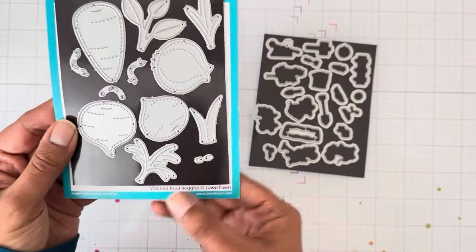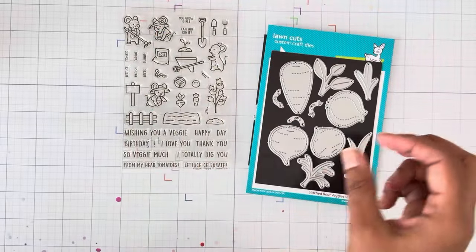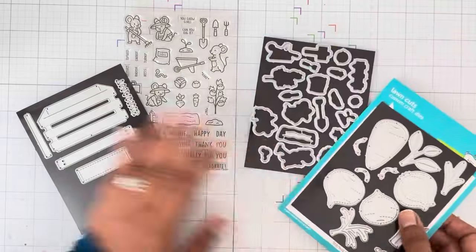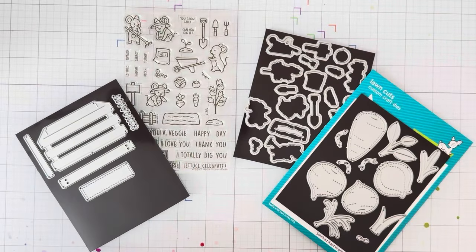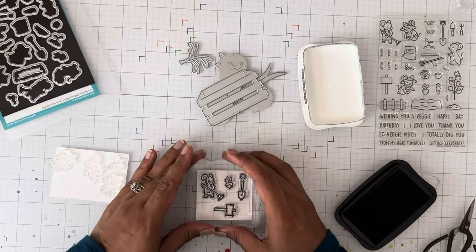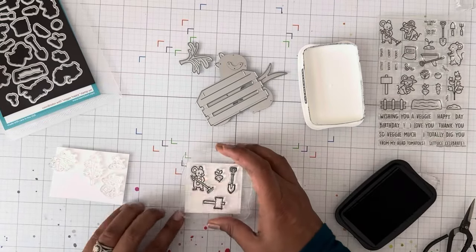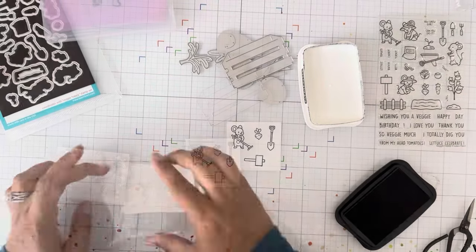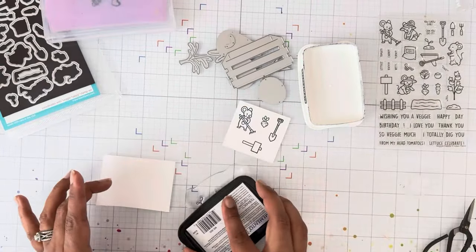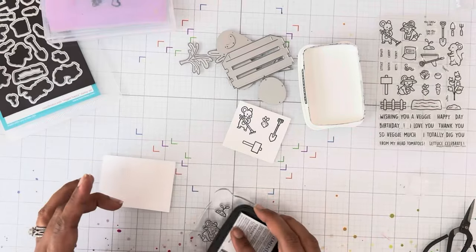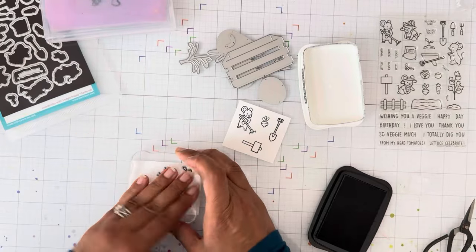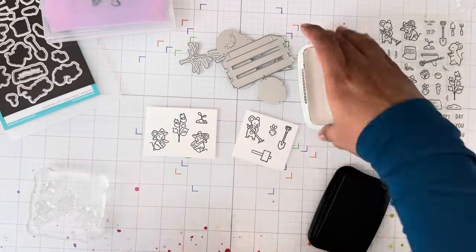I'm also going to include the stitched root vegetables and the harvest crate, which is also from Lawn Fawn. So the first thing I'm going to do is start by stamping the images that I'm going to be using in my card. I love to use all of my white paper and so I split it into two pieces. I'm just laying down my stamps first and then I'm inking them up with some Memento Black Tuxedo ink and stamping those and making sure I get a really nice crisp image.